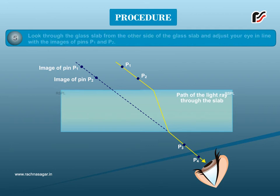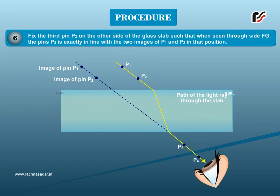Look through the glass slab from the other side of the glass slab and adjust your eye in line with the images of pins P1 and P2.